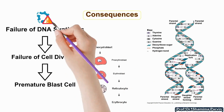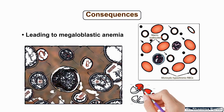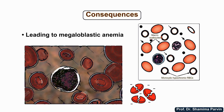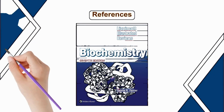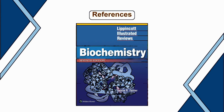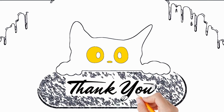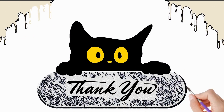As a result, cell division will not take place and premature blast cells will remain in circulation, leading to impaired red blood cell production and ultimately causing megaloblastic anemia. This was a simplistic overview of the folate trap cycle. Please refer to additional resources for more details. Thank you for listening — if you found this video helpful, please leave a like, subscribe, and share.